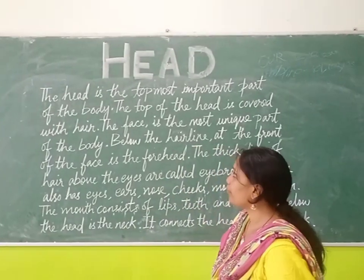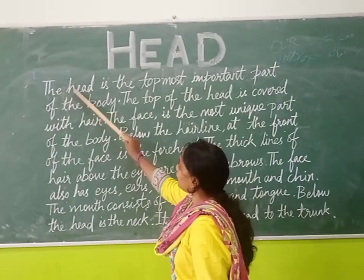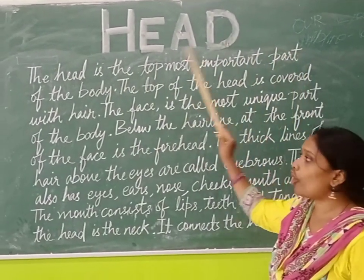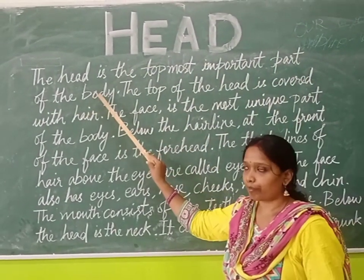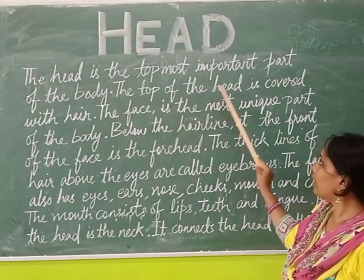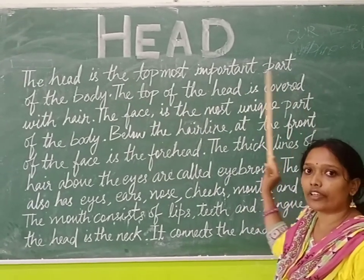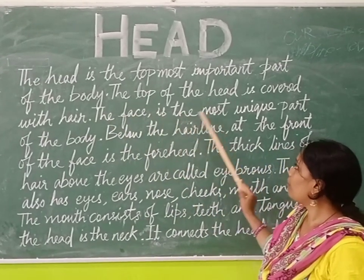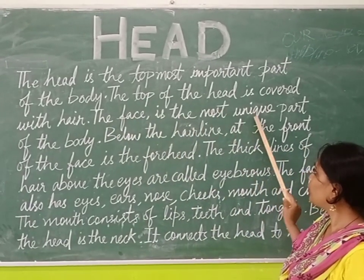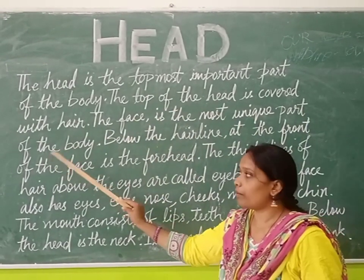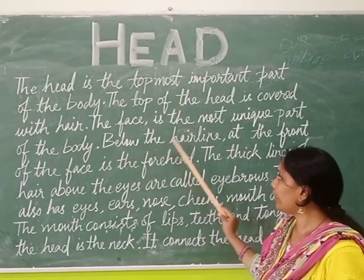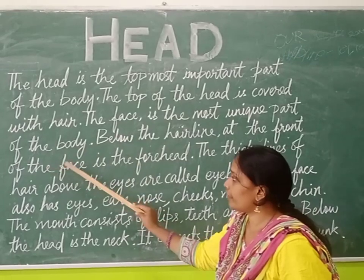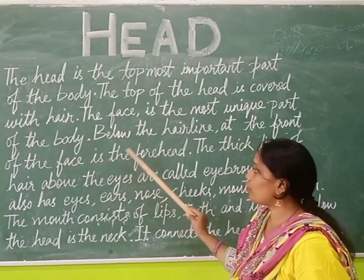So let us start. The head is the top most important part of the body. The top of the head is covered with hair. The face is the most unique part of the body. Below the hairline, at the front of the face is the forehead.